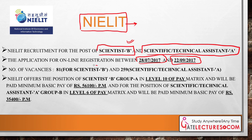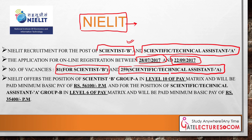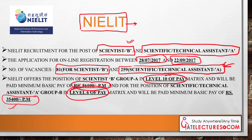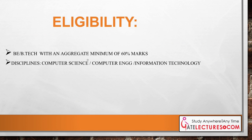The number of vacancies is higher for NIELIT — 81 vacancies for Scientist B and 259 vacancies for Technical Assistant A. NIELIT offers the Scientist B Group A position at Pay Matrix Level 10 with a minimum pay of 56,100 rupees per month, same as ISRO. The Technical Assistant A position has a Level 6 pay grade with a minimum basic pay of 35,400 rupees.